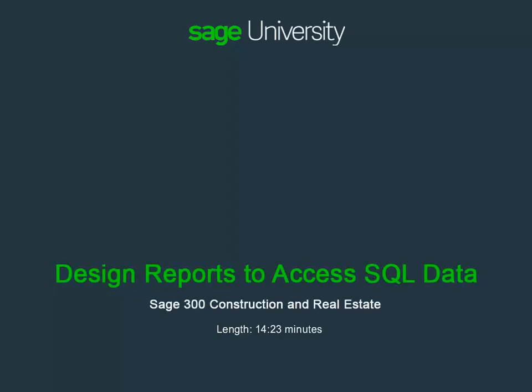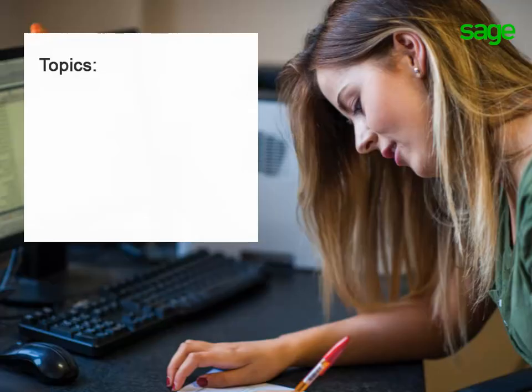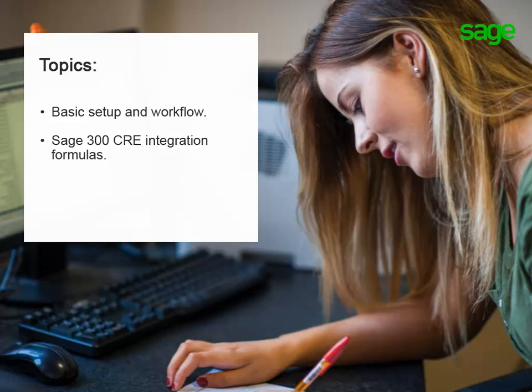Let's find out what you need to know about writing reports to access the information stored in your SQL Server database. This lesson focuses on using Crystal Reports for reporting, and to get the most out of this lesson, you should have a working knowledge of using this report writing tool. Topics include the general setup and workflow in Sage 300 Construction and Real Estate, the integration formulas to add to your Crystal Reports so they work correctly in your Sage software, and connecting to your SQL Server database for reporting.